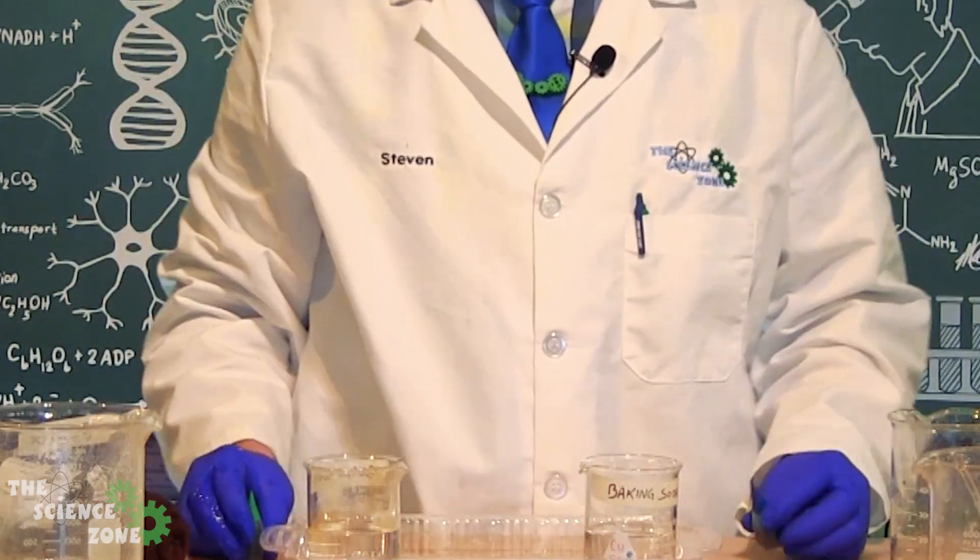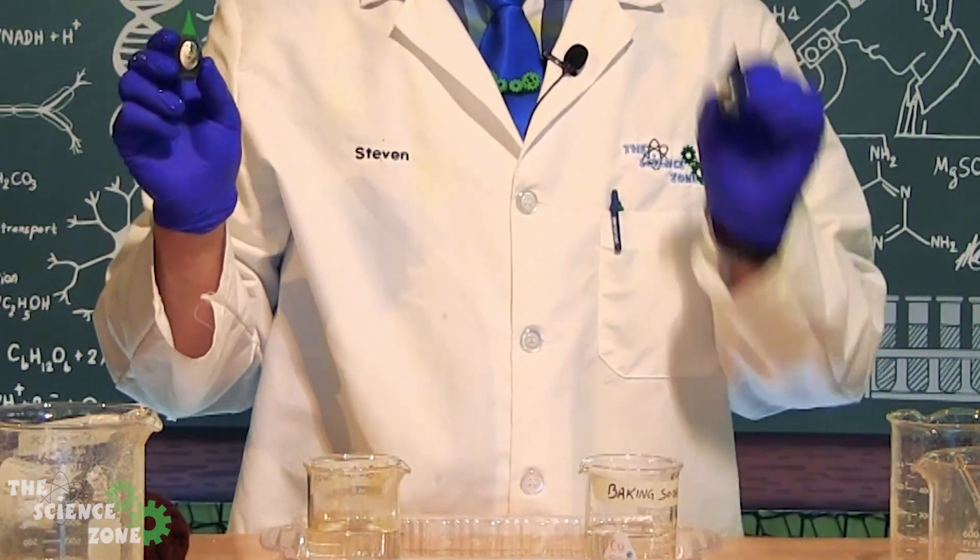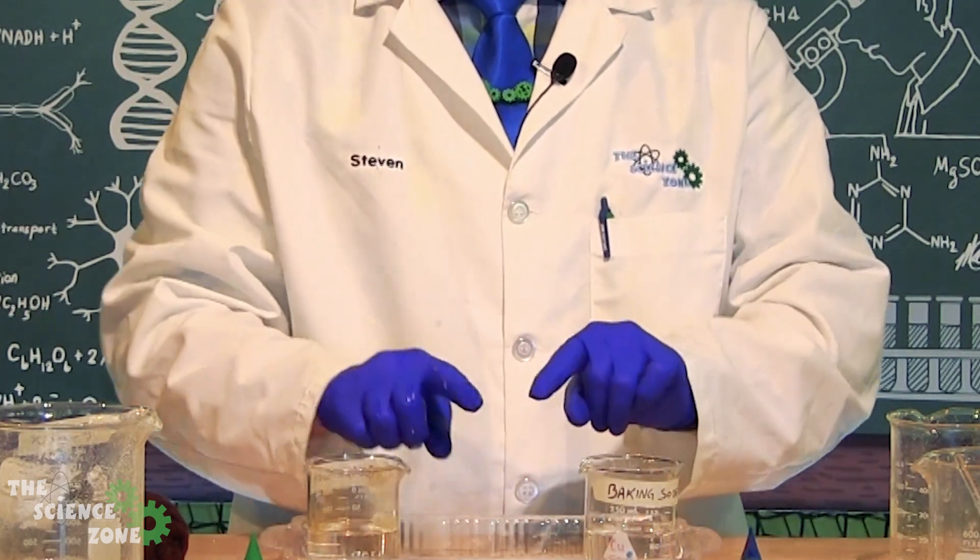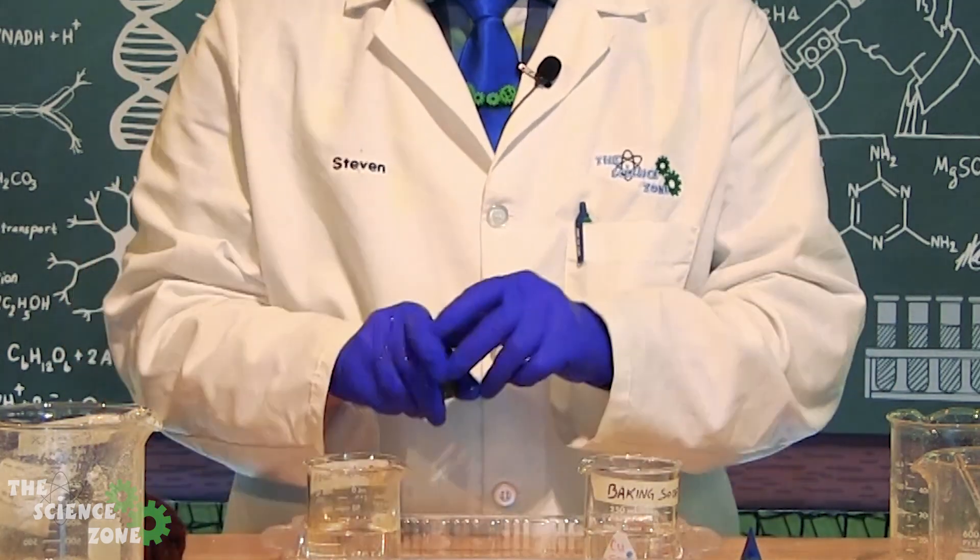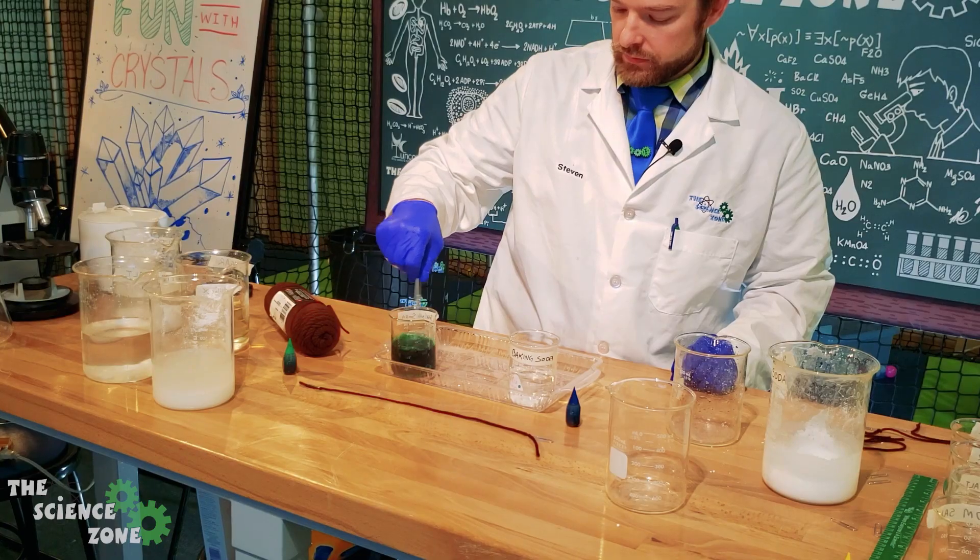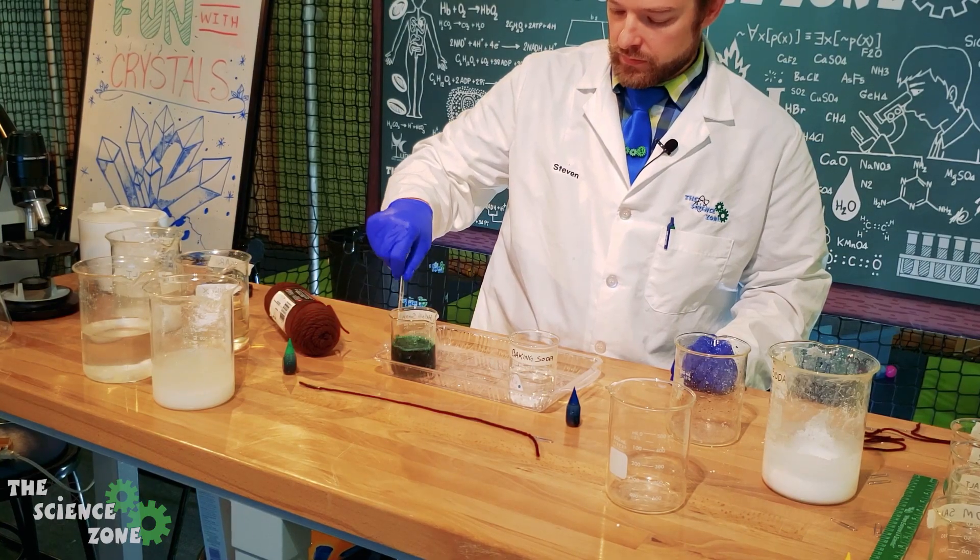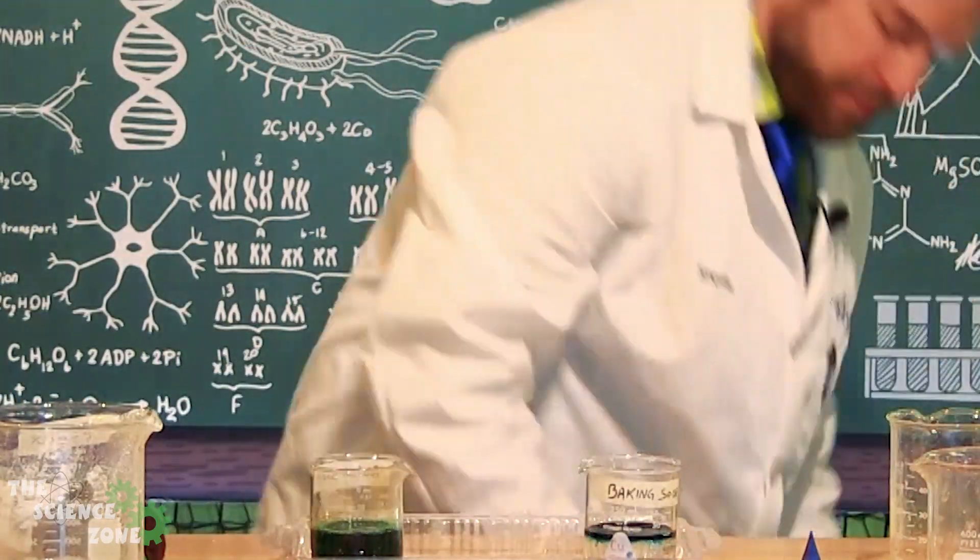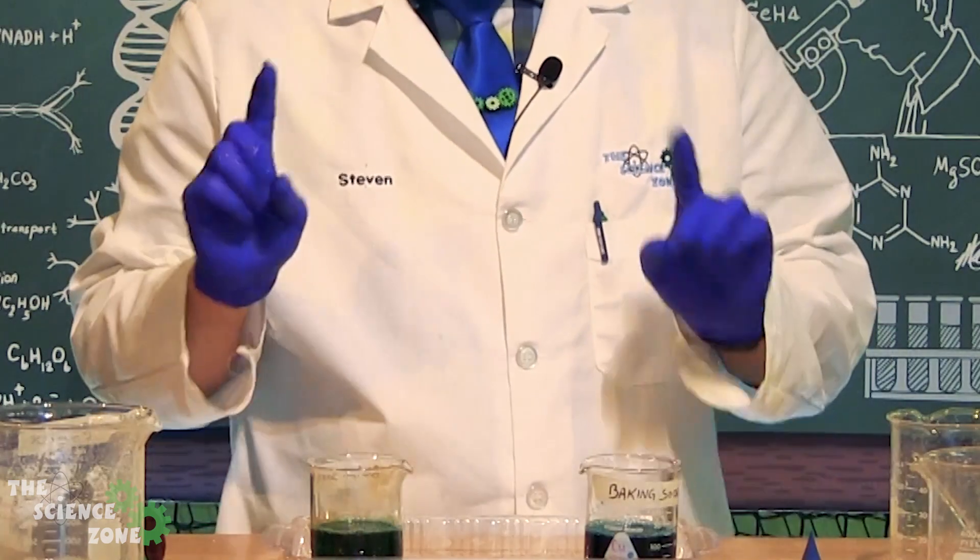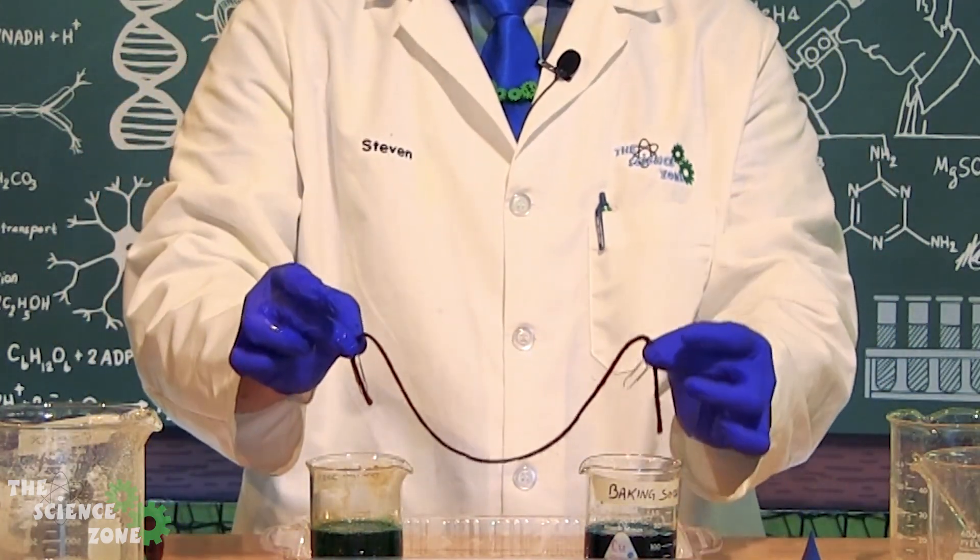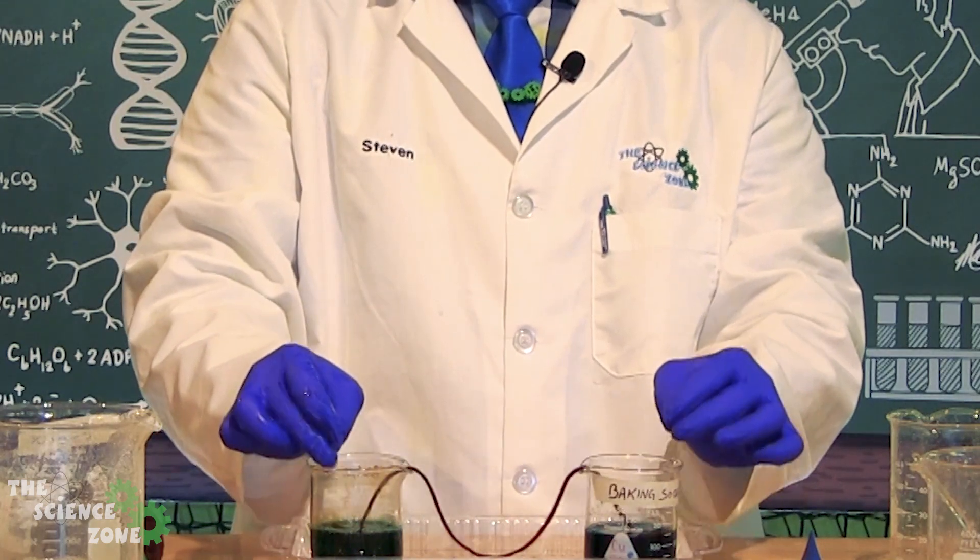But before we put our yarn in our solution, we're going to jazz things up a bit to ensure you can really see the crystals as they grow and travel up the yarn over the next few days. We're going to add some food coloring to each beaker and stir it in real good, rinsing off our stirring rod between so we don't mix our colors. Now gently place the string into the solution and get that nice smile to form between each beaker.